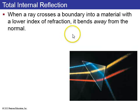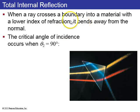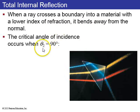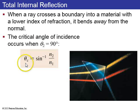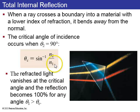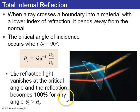Total internal reflection comes from the fact that when a ray crosses a boundary into a material with a lower index of refraction, it bends away from the normal. This can only continue until theta2 equals 90 degrees. Since sin of 90 degrees is 1, you can find theta_c, the critical angle, equal to inverse sine of N2 divided by N1, where N2 is less than N1. At this angle and beyond, there is no refracted ray and all the light is just reflected.